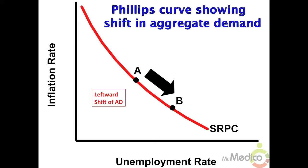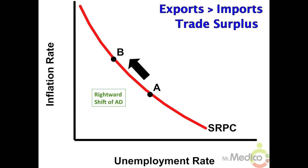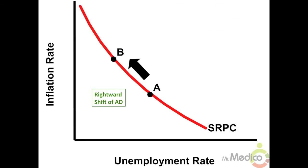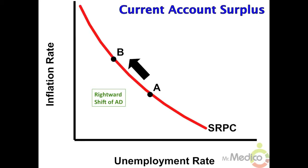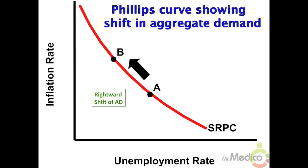The price level decreases, real GDP falls, and unemployment rises. If a nation's exports are greater than its imports, it has a trade surplus or current account surplus. When net exports increase, aggregate demand will increase. In the long run, exports and imports will balance out.